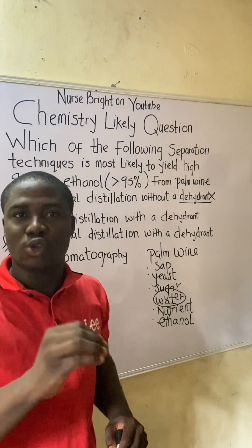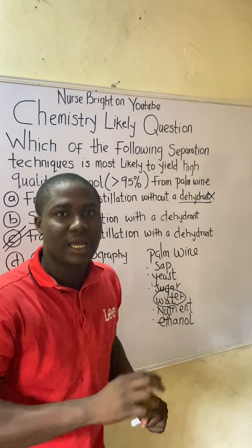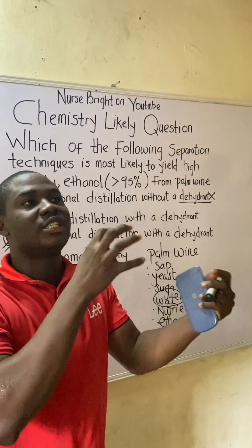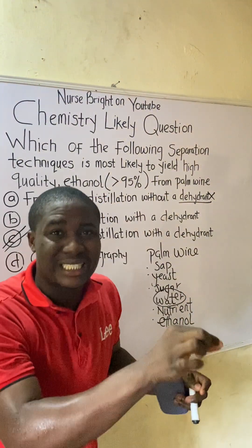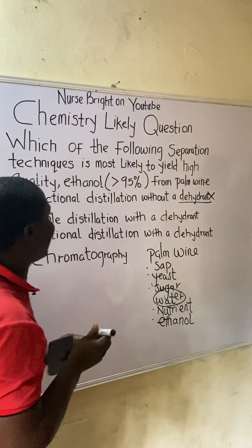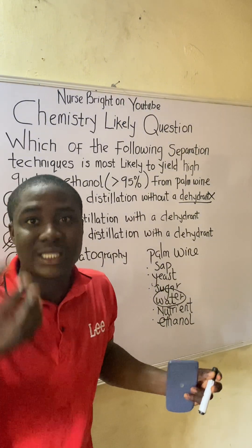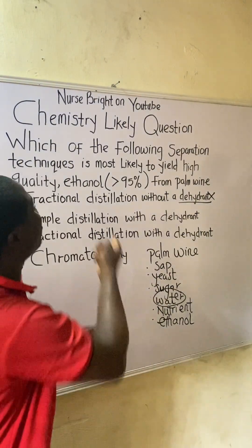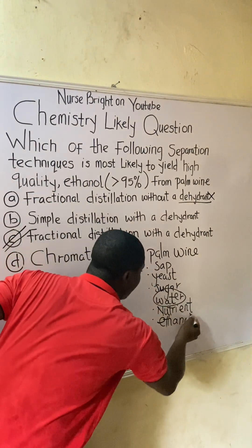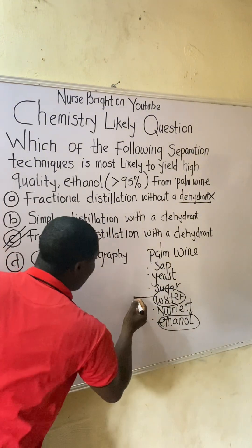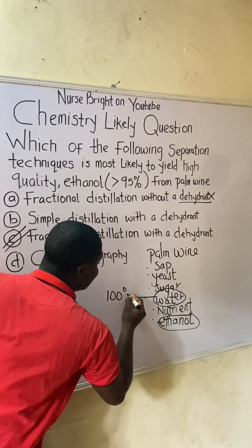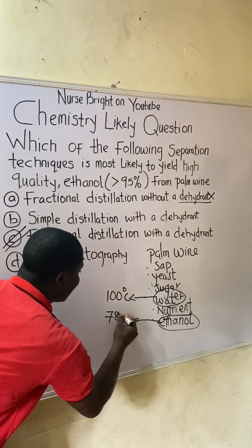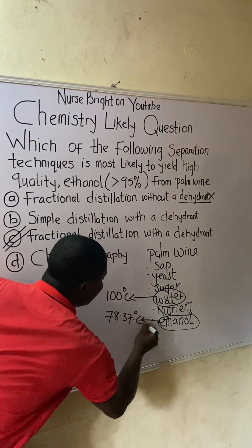The best answer is option C: fractional distillation with a dehydrant. Here is a simple trick to determine whether to use fractional or simple distillation. Both work on separation of liquids based on boiling point difference. The boiling point of water is 100°C, and the boiling point of ethanol is 78.37°C — know this.